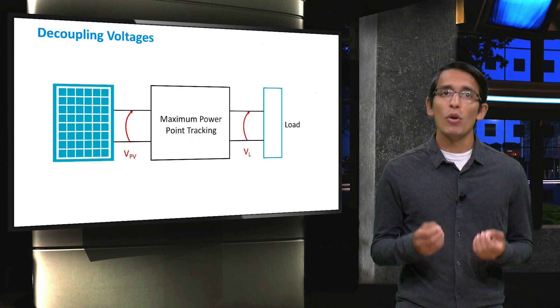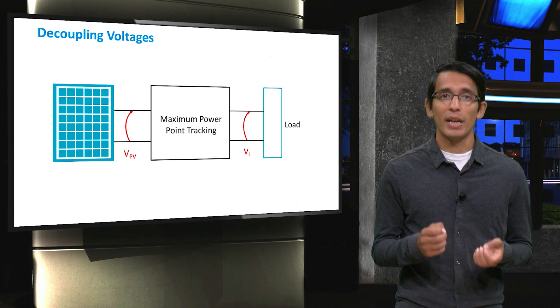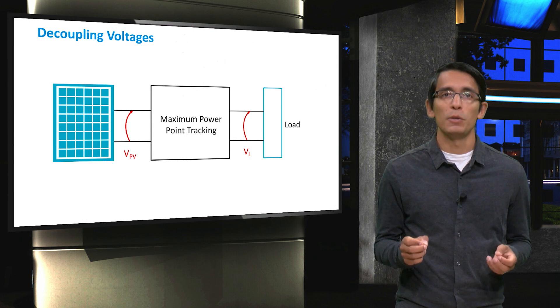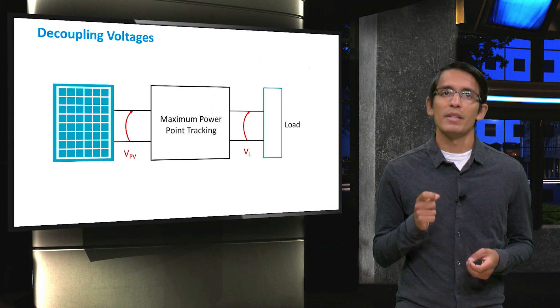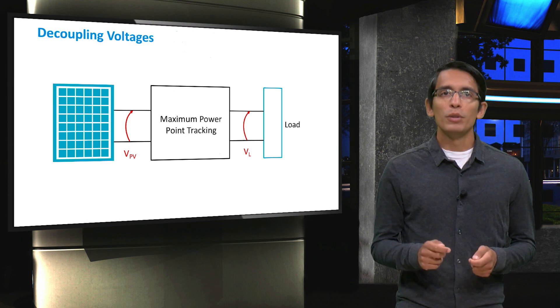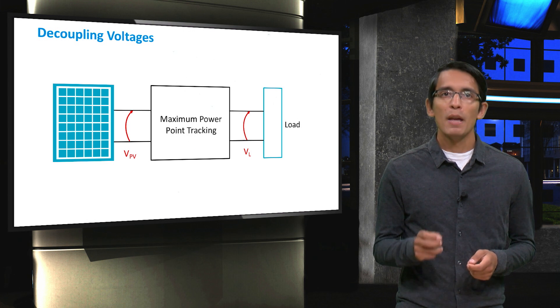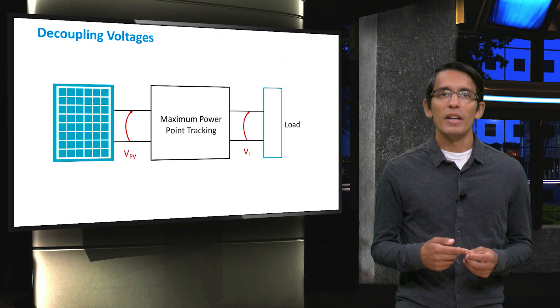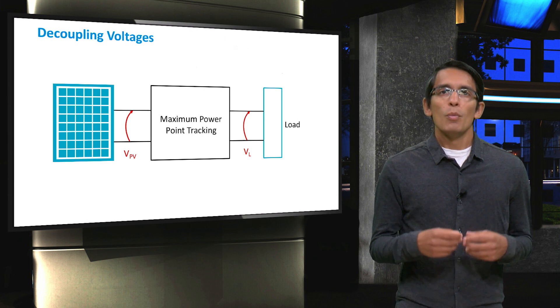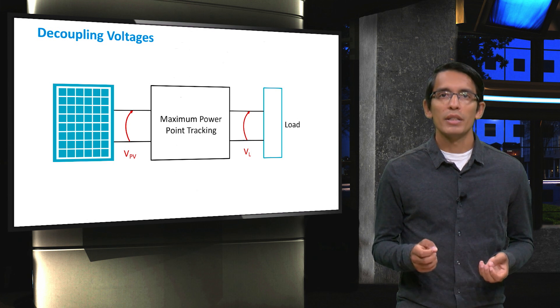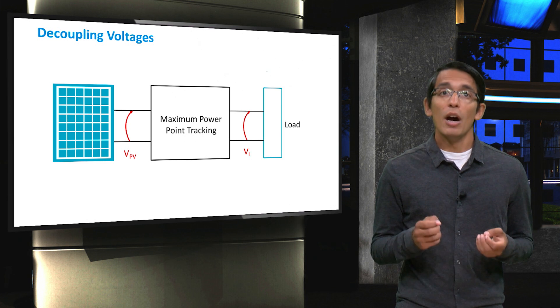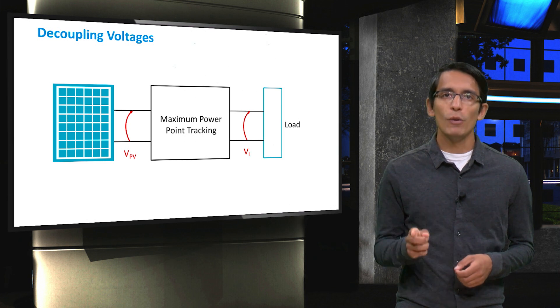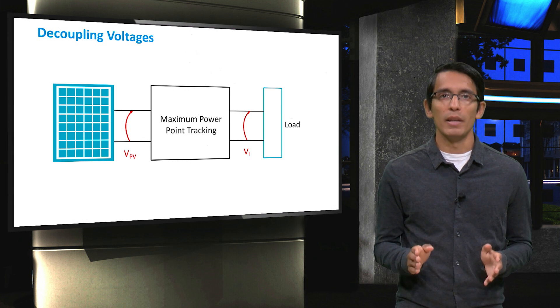So now you see the first important aspect of maximum power point tracking, namely the decoupling of the load voltage from the PV voltage. As PV system designers, we always want the voltage at the PV side to be the MPP voltage. The load should be independent whether it is a battery, some simple devices, or the grid. We will do this using power electronics and you will learn more about that in other videos during this course. Just keep in mind that the PV voltage and the load voltage need to be isolated.